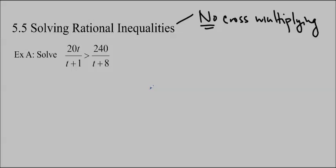You might remember from 5.4 that we had two methods to solve. The first method was to use cross-multiplying, and we cannot do that here. That's because if I multiply by t plus 1 and t plus 8, sometimes it's positive and sometimes it's negative, and if it's negative, we have to change the sign. Because we don't know whether or not it is positive, we cannot cross-multiply.